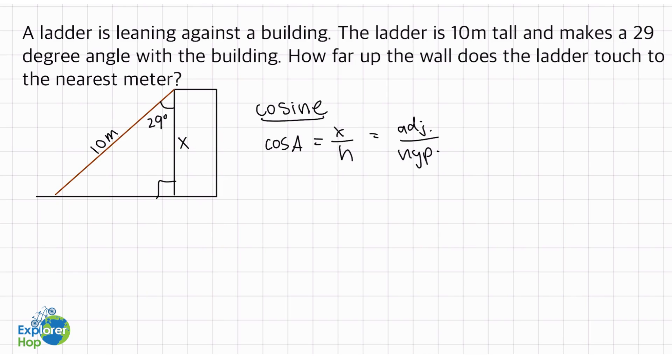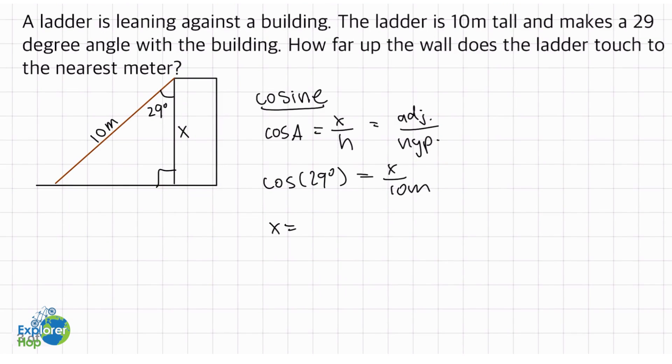So let's plug in these values. First we have cos times 29 degrees equals x over 10 meters. So to find the value of x to the nearest meter, we have to multiply cos 29 times 10 meters, and what we get is 8.7 meters.